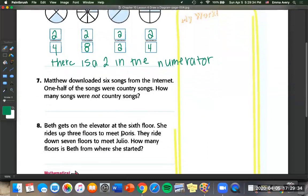Number seven. Matthew downloaded six songs from the internet. One half of the songs were country songs. How many of the songs were not country songs? So it tells us that there were six songs. So we're going to draw a diagram with six pieces. And half of the songs were country songs. So half of six is three. Because we know three plus three equals six. So half are country songs, which means the other half are not country songs. I'm going to say three songs.